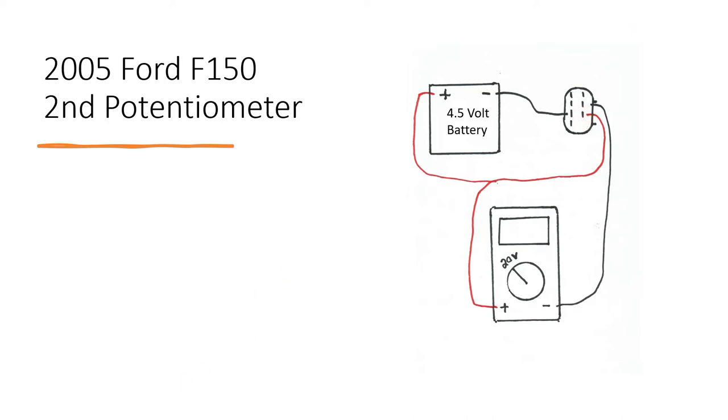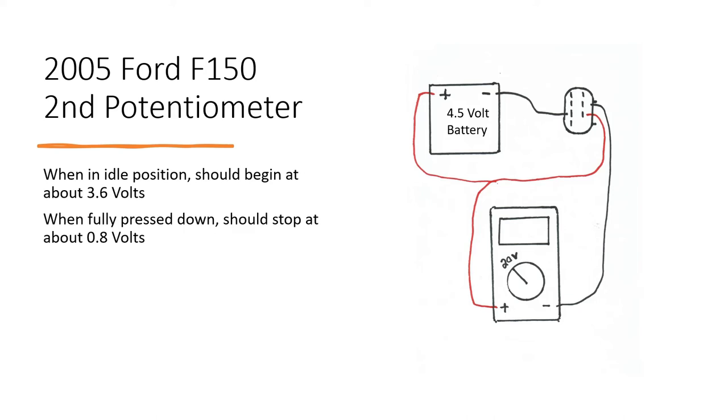After you do that, the multimeter should read about 3.6 volts in an idle position. Then, as you press it down, it should stop at about 0.8 volts. Remember, you should be checking for spikes and glitches during the test.